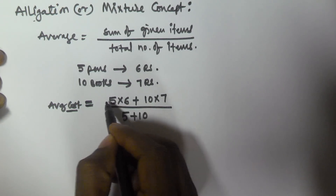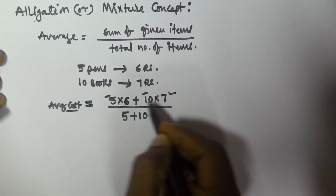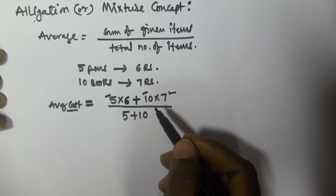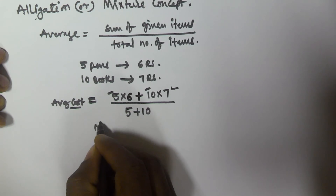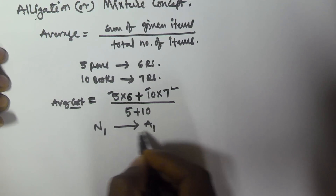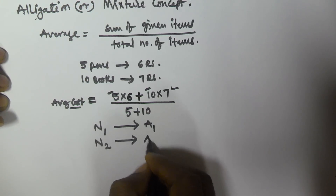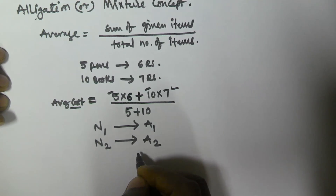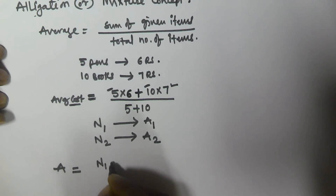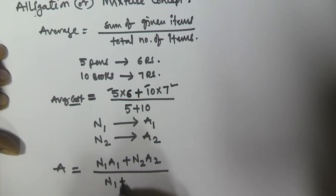So this is the weighted average. Now let's generalize this. There are N1 items with an average of A1 — equivalent to 5 pens at 6 rupees each. Similarly, there are N2 items with an average cost A2. So the total average cost A equals N1·A1 plus N2·A2, divided by N1 plus N2.